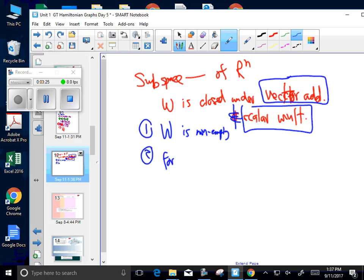And then we'll look at for every U, V, an element of W, you're going to be able to add the vectors. You're going to be able to multiply the vectors to show that those are in.